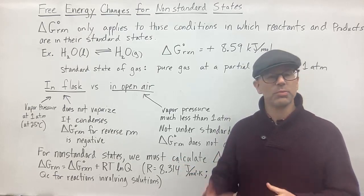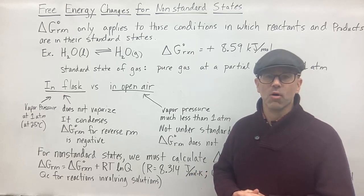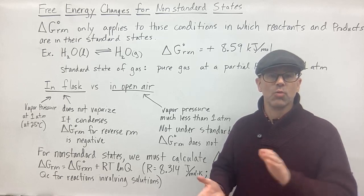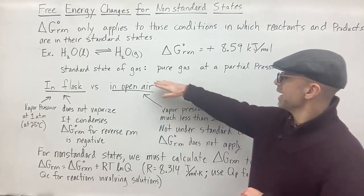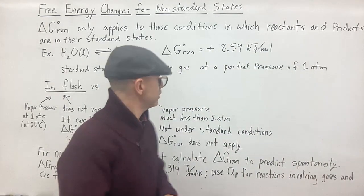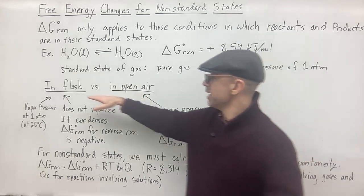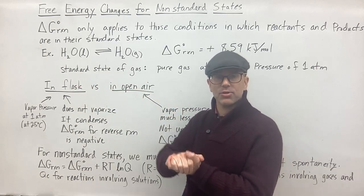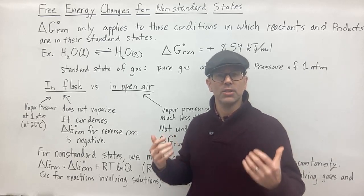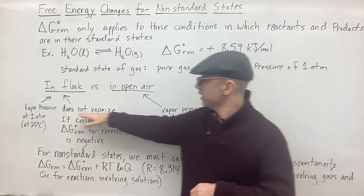When you spill water on a table and it evaporates over a short period of time, that indicates the water is not under standard conditions. One of the standard conditions for a gas is that it is a pure gas at a partial pressure of one atmosphere. In a closed or sealed flask, the water vapor will build up until it reaches a partial pressure of one atmosphere at 25°C, so the water won't evaporate.